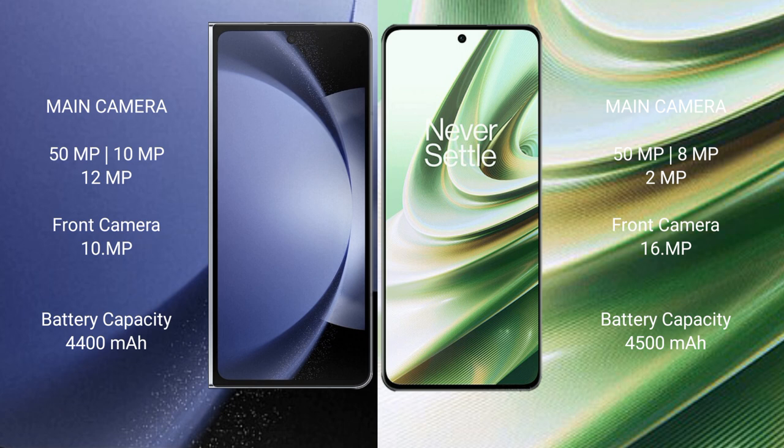Samsung Galaxy Z Fold 6 features a rear triple camera setup: 15MP plus 10MP plus 12MP, and a 10MP front camera. OnePlus 10R features a rear triple camera setup: 150MP plus 8MP plus 2MP, and a 16MP front camera.